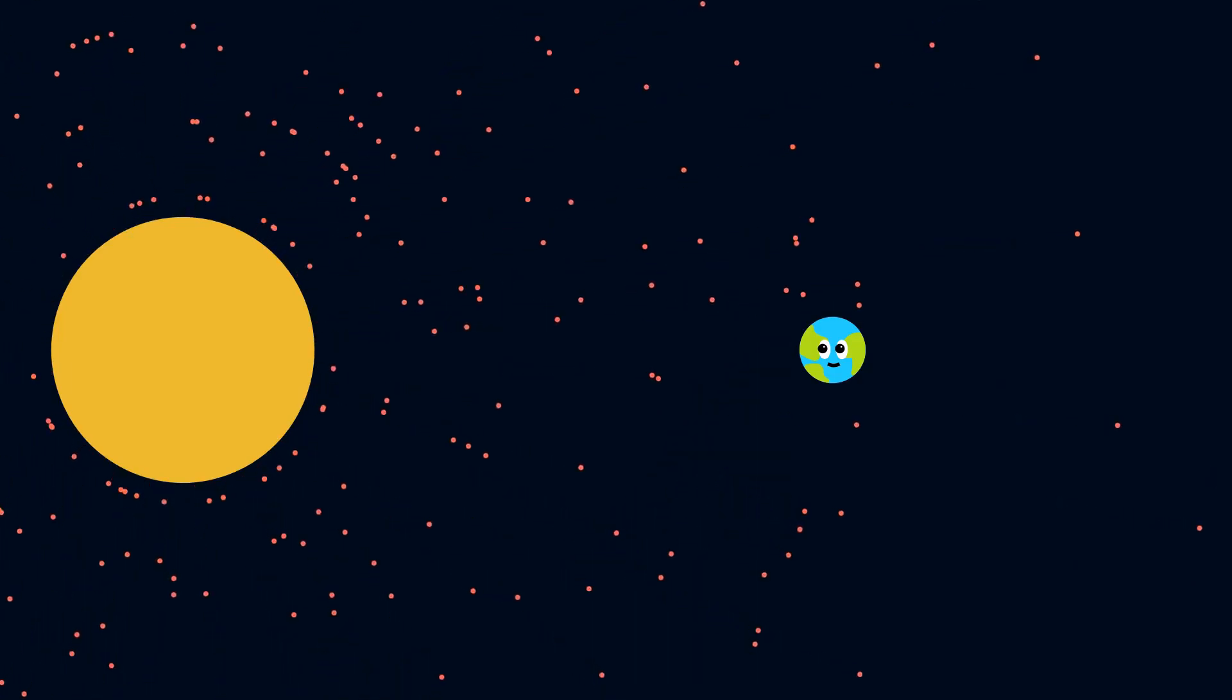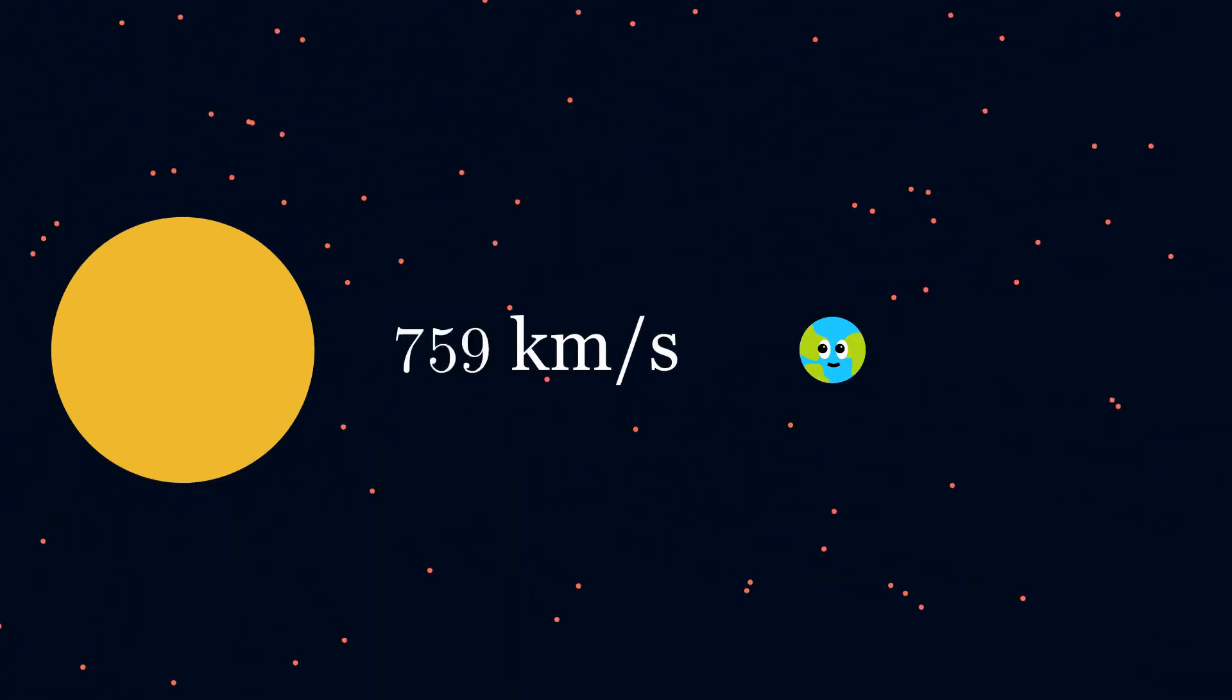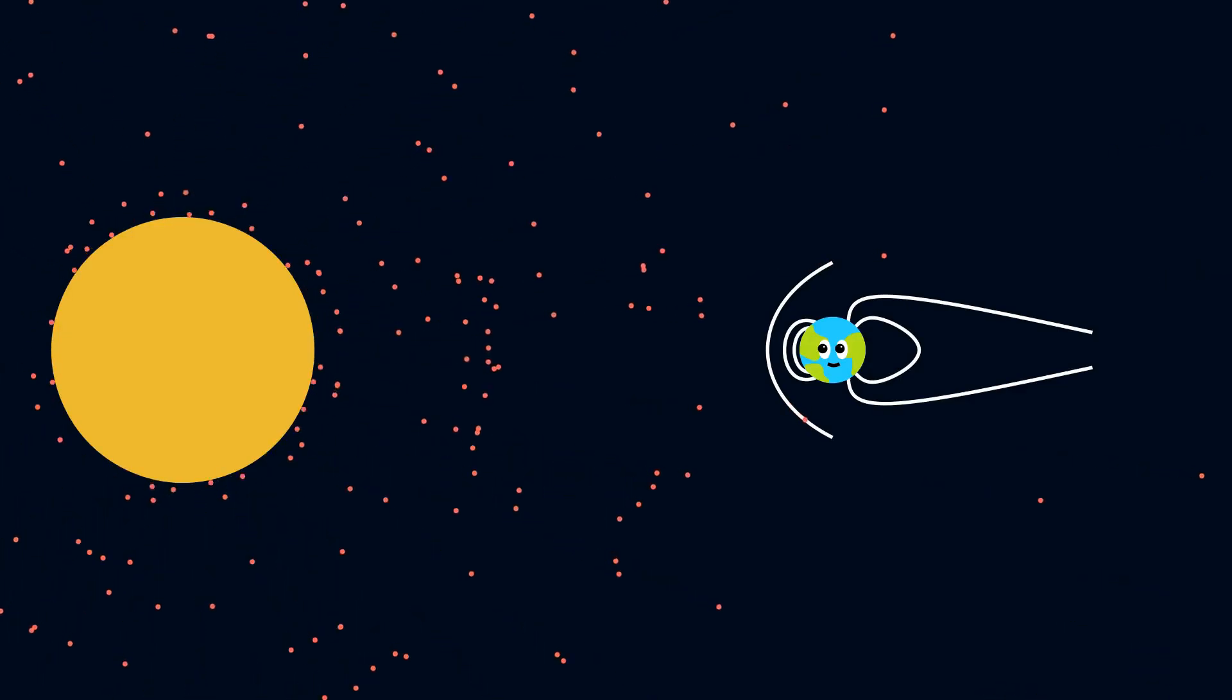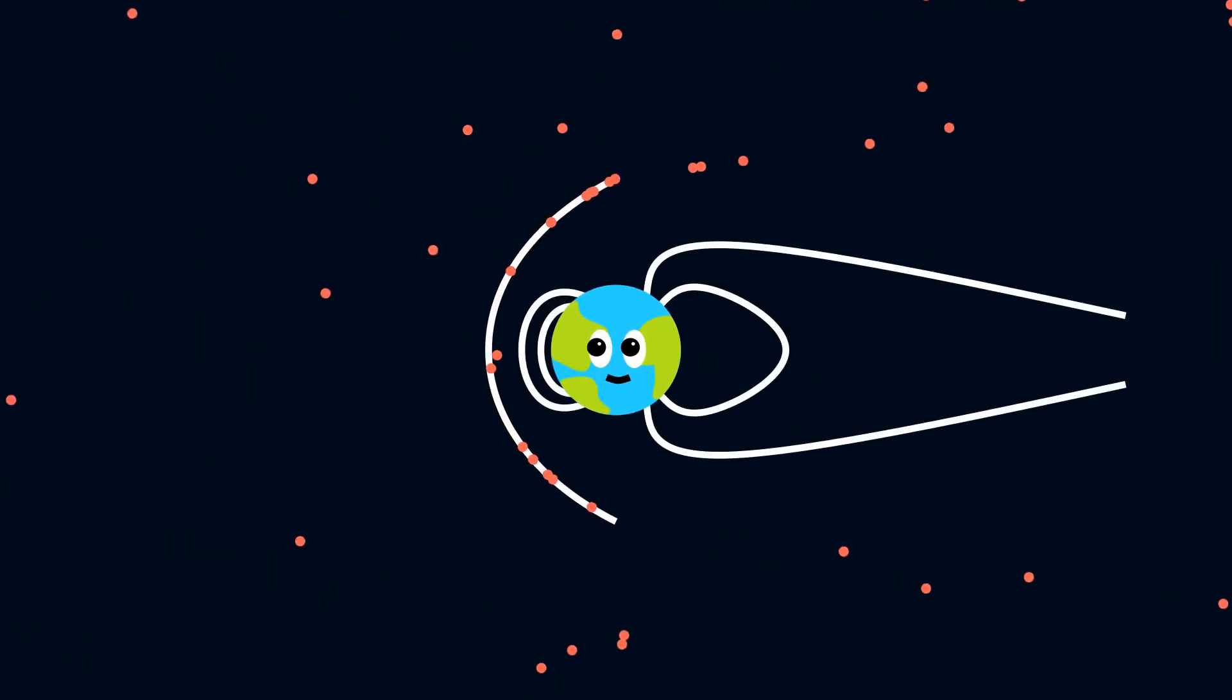These particles travel between 300 and 800 kilometers per second and are constantly hitting Earth, but before you panic and write news headlines, Earth is actually protected by a magnetic field. A gentle breeze of 400 kilometers per second has no real effect, apart from creating the northern lights.